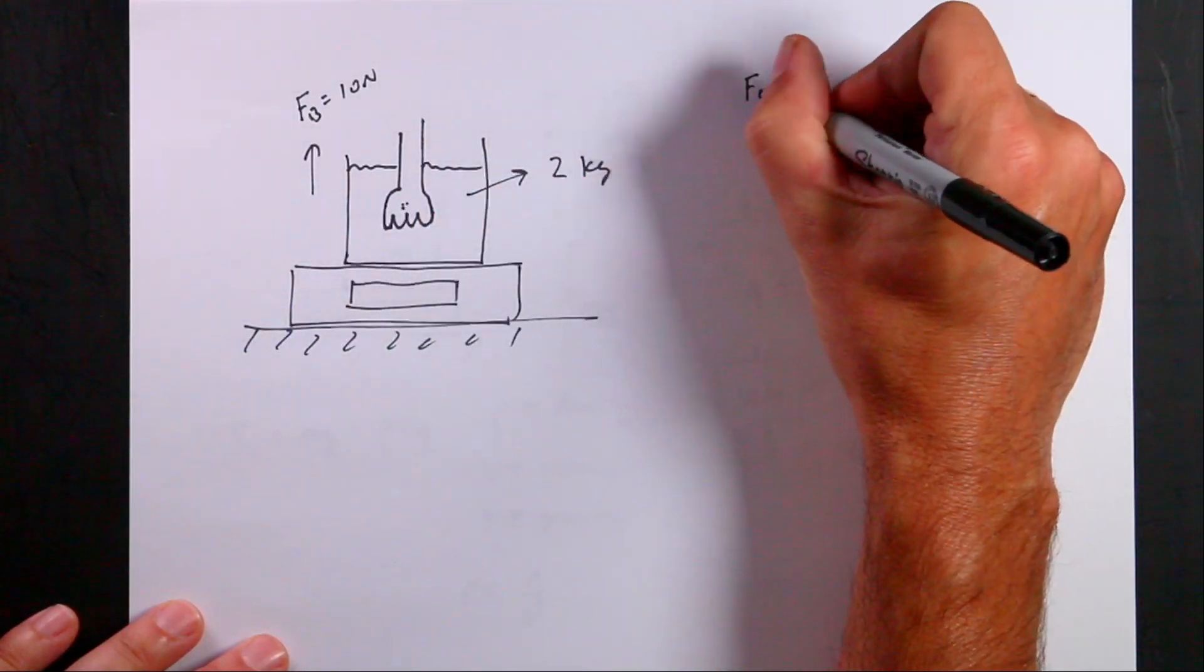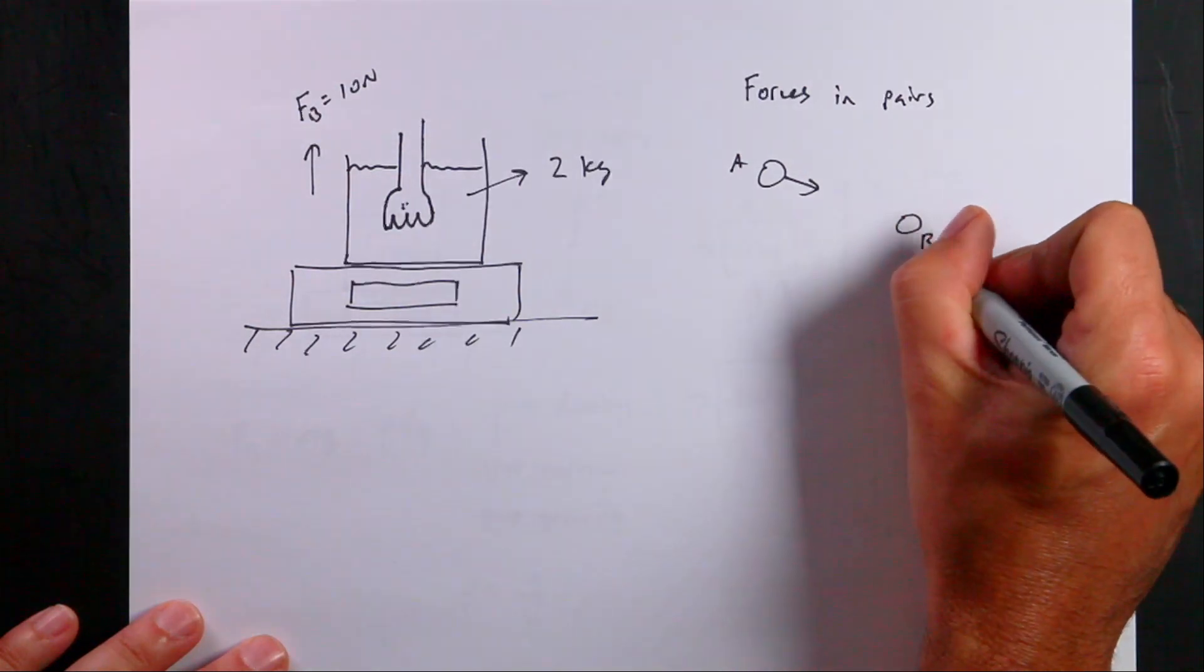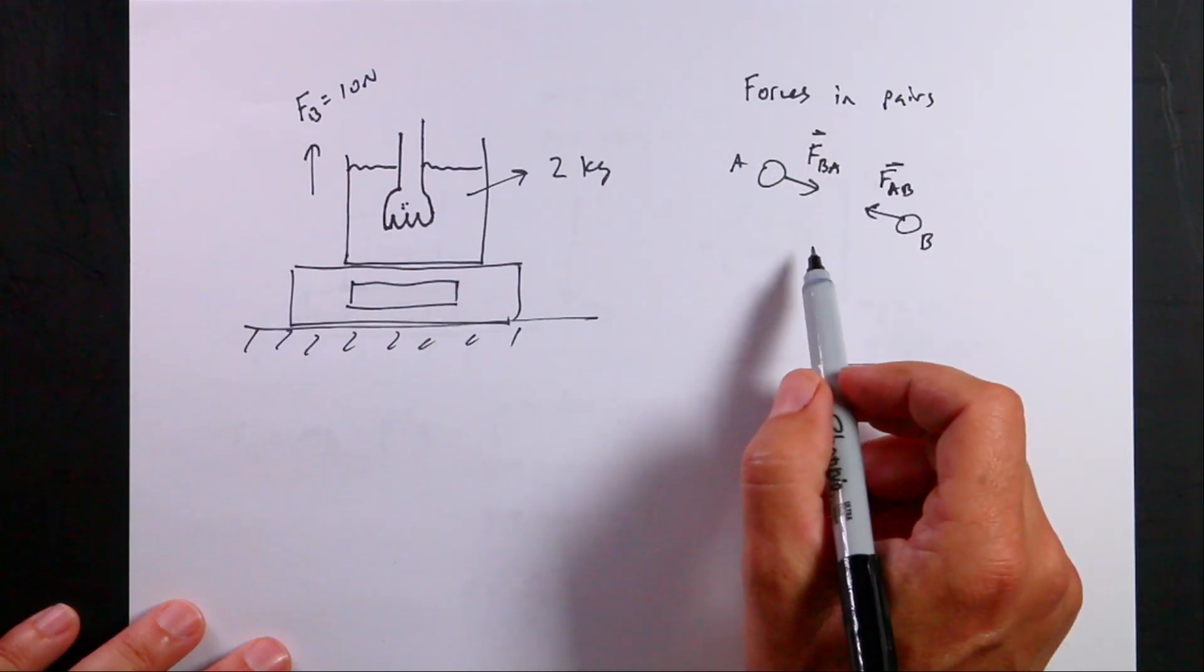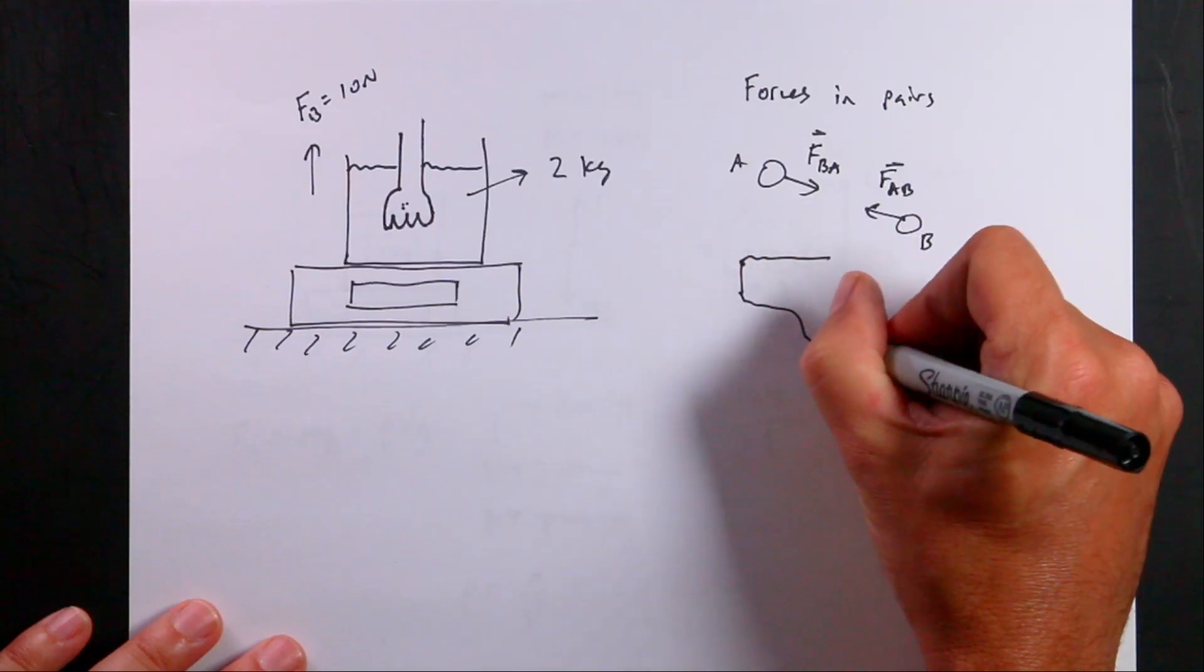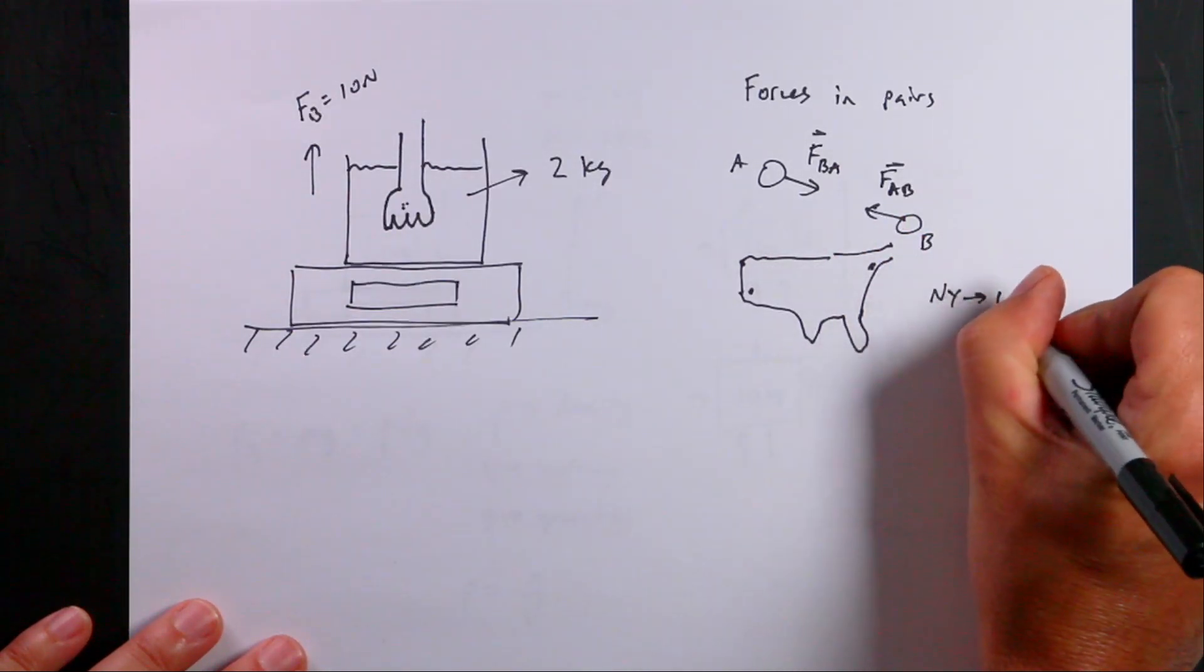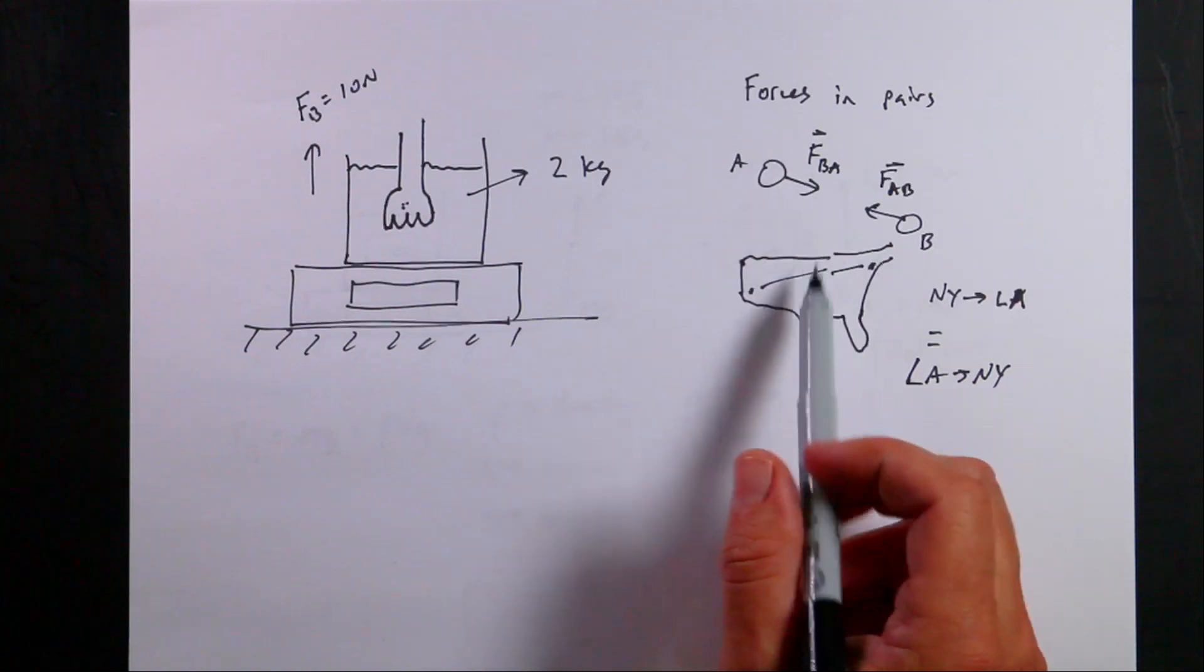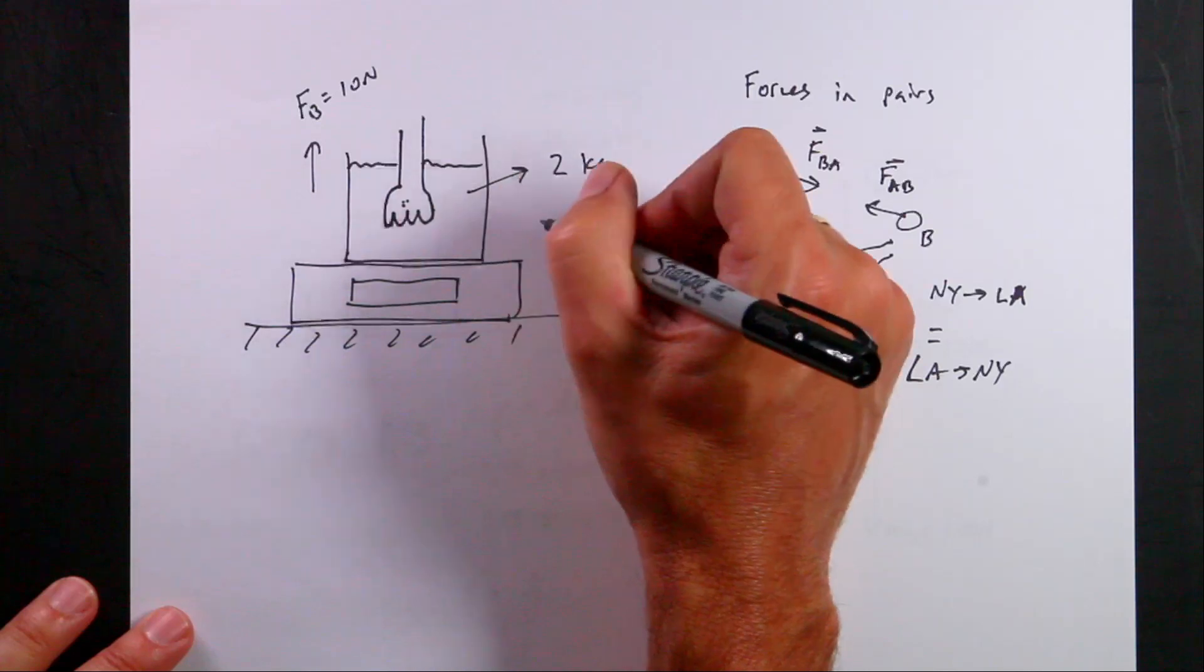But if the water is pushing up on my hand, my hand has to push down on the water, because forces come in pairs. Forces are always an interaction between two things. This is object A, this is B. If there's an interaction between A and B, this is F_B on A, and this is F_A on B. The magnitude of these two vectors are the same because it's the same interaction. It's like the distance from New York to LA is equal to LA to New York, just in the opposite direction. One distance between them. So if the water pushes up on my hand with 10 newtons, my hand pushes down with a force of 10 newtons on the water.